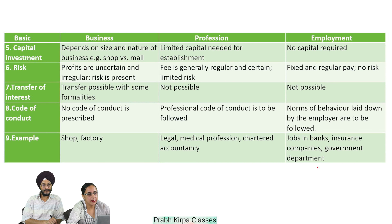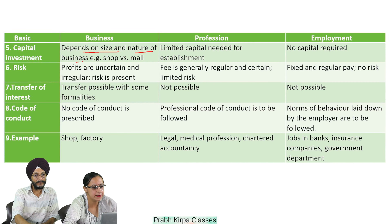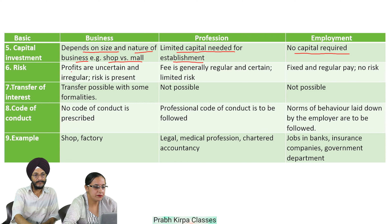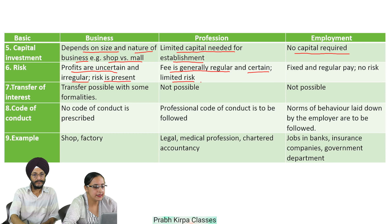Fifth, capital investment: in case of business, capital investment required depends on the size and nature of business, for example a shop versus a mall. In case of employment, no capital is required by the employee. Sixth, risk: in case of business, profits are uncertain and irregular — risk is present. In case of profession, professional fee is generally regular and certain, and limited risk is there. In case of employment, the employee gets fixed and regular pay with no risk.